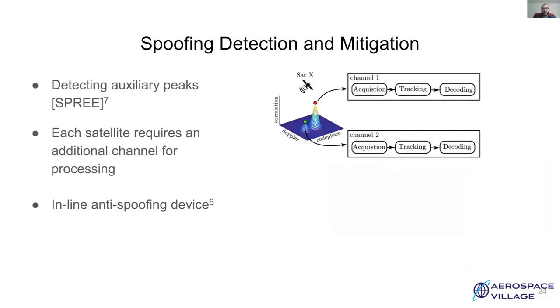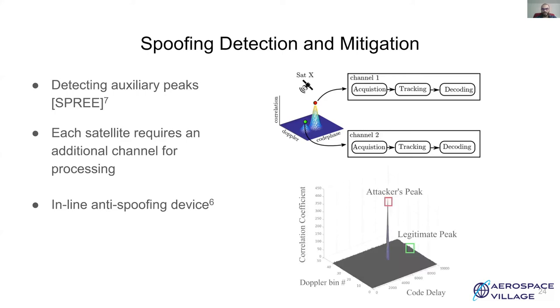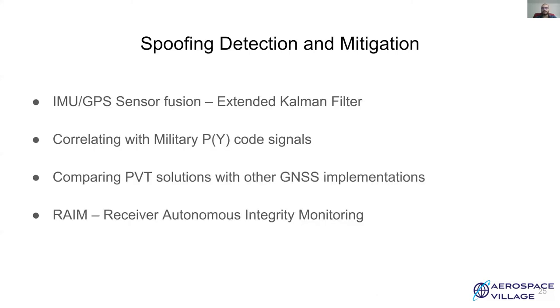Recall the function of acquisition module. A correlation peak is formed for every occurrence of the CA code in the received signal. A receiver proposed in SPREE looks out for such peaks and based on separation between these peaks, it can detect spoofing. Even though it can detect a strong seamless takeover attack, it can only do so if the auxiliary peaks are visible. For example, if the attacker is very powerful, then the legitimate signals are buried under noise floor introduced by the adversarial signals, as is in this case where the second peak marked in green is barely visible. Here the attacker has about 10 dB of power advantage.